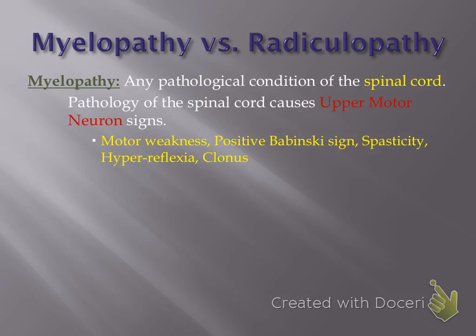Cervical myelopathy results from compression of the spinal cord, resulting in an upper motor neuron presentation with a positive Babinski, spasticity, weakness in the extremities, hyperreflexia, and abnormal clonus. Along with those, you can get sensory deficits like numbness and tingling in the hands and even into the legs.